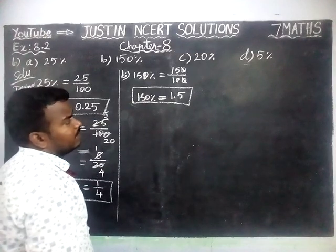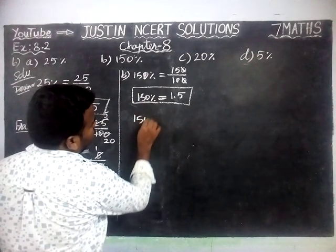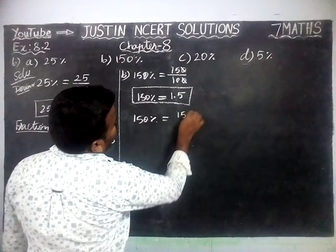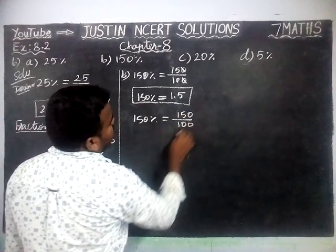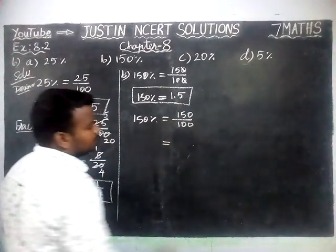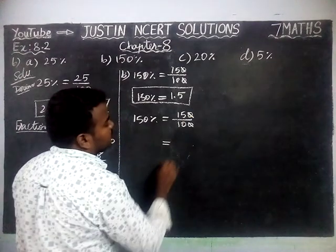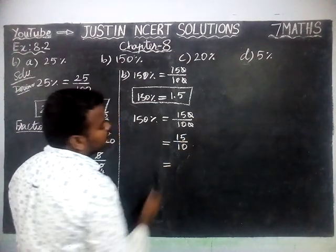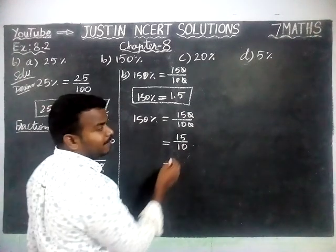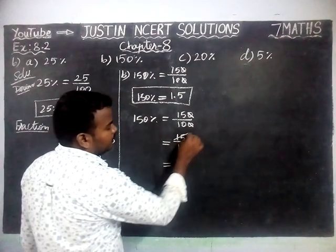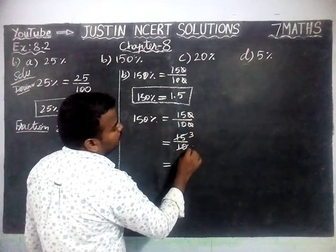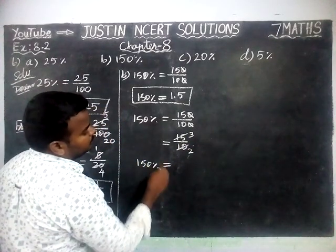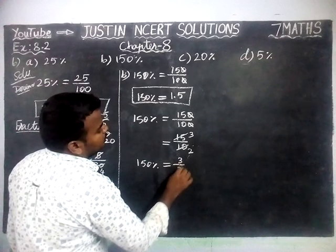150% is equal to 1.5 in decimal. Next we are going to find it in fraction form. 150% is equal to 150 divided by 100. The zeros get cancelled, remaining we have 15 by 10. Now we are going to divide by a common divisor — we can divide by 5: 3 fives are 15, 2 fives are 10. So 150% is equal to 3 by 2.